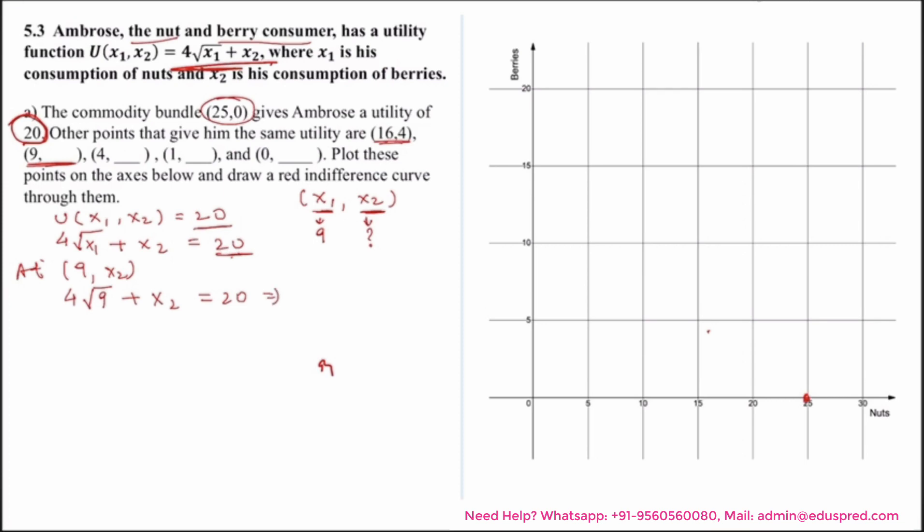So this would be 4 multiplied by 3 plus x2 is equal to 20. That would be nothing but 12 plus x2 is equal to 20, and this gives x2 to be 8. So here you have a point that gives him the same level of utility, which is 20, is (9, 8). Again we have to repeat the same procedure at different points: (4, dash), (1, dash), and (0, dash).